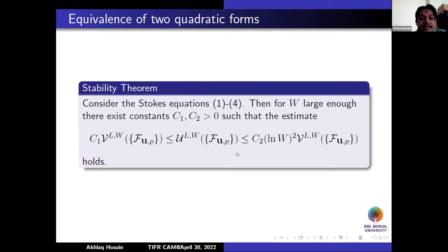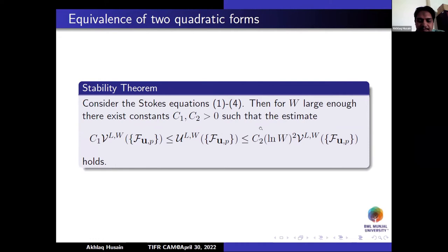The main stability theorem states that the quadratic form U_{LW}(F,U,P) is bounded above by C₁ times B_{LW} and bounded below by C₂ times (log W)². This stability estimate tells us we can use U_{LW} as a preconditioner for B_{LW}, and the condition number of the preconditioned system varies like (log W)². So even for very high-order polynomials, the condition number is not very large.